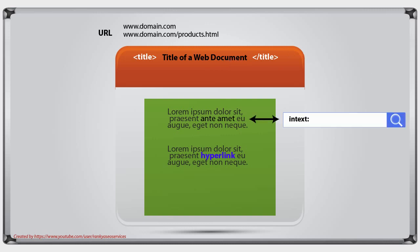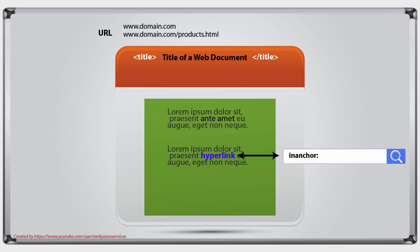When we say intext and search Google with that advanced query, we're saying: whatever I'm searching, make sure it is contained within the text of a document. We also have inanchor, which says to Google: make sure whatever I'm searching is within the hyperlink of a web document. Now that we understand the anatomy of an HTML document, we can continue learning how to fully search engine optimize our website and landing pages. Thank you for learning with me — let's continue learning.